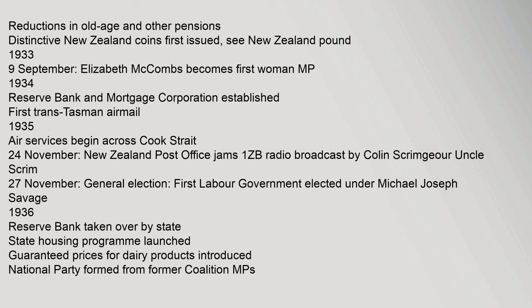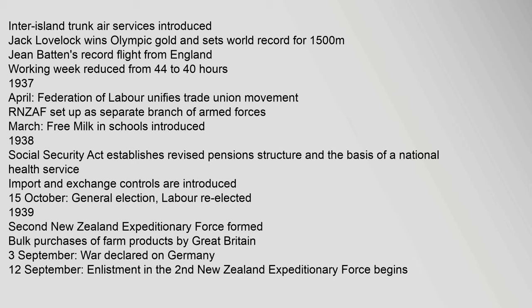1936: Reserve Bank taken over by state. State Housing Programme launched. Guaranteed prices for dairy products introduced. National Party formed from former coalition MPs. Inter-Island Trunk Air Services introduced. Jack Lovelock wins Olympic gold and sets world record for 1,500 m. Jean Batten's record flight from England. Working week reduced from 44 to 40 hours.